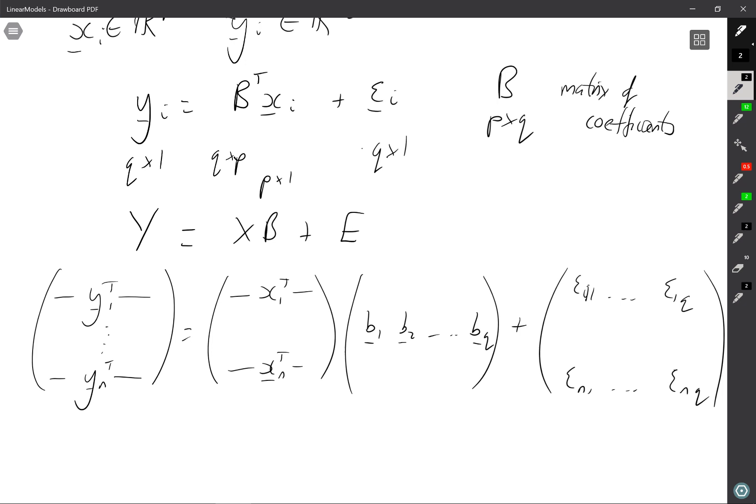Now a common assumption to make here is that the errors epsilon 1 up to epsilon n, remember these are all of dimension q, that these are iid with a multivariate normal distribution of dimension q, zero mean and covariance matrix sigma that we need to estimate.